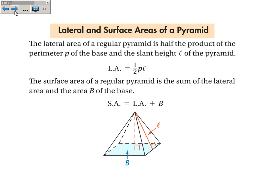The equation for the lateral area of a pyramid is one-half PL. P is the perimeter of the base, and L is the slant height. The surface area is the lateral area plus one base. It looks very much like our surface area of a prism, except now we have one base instead of two.